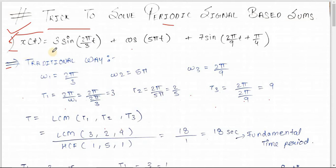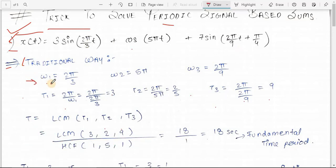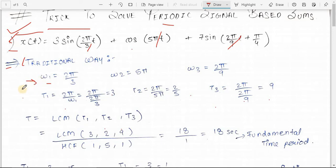The first sum we have is x(t) = 3·sin(2π/3·t) + cos(5π·t) + 7·sin(2π/9·t + π/4). First let us see the traditional way. The traditional way says you have to find out the omega of each term. So omega₁ = 2π/3, omega₂ = 5π, omega₃ = 2π/9.